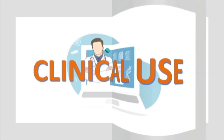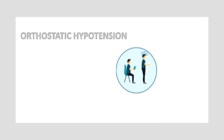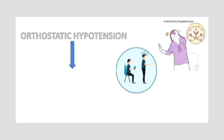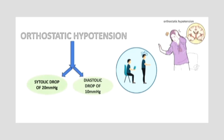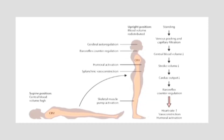Talking about the clinical use of midodrine: it stands tall against orthostatic hypotension. This is the condition marked by a sudden drop in blood pressure when a person moves from lying down to a standing position — a systolic drop of 20 mmHg and diastolic drop of 10 mmHg. This causes dizziness lasting 1 to 3 minutes. When a person stands, blood flow suddenly increases toward the legs due to gravity, lowering cardiac output and stroke volume, activating baroreceptors and reducing blood supply to the brain, causing dizziness.